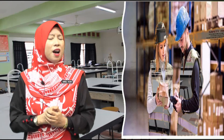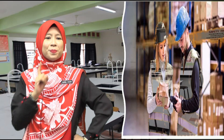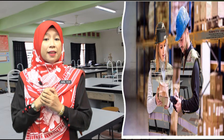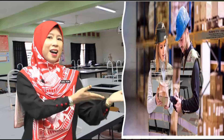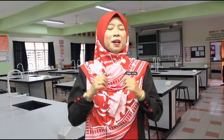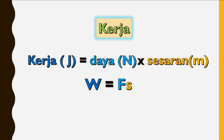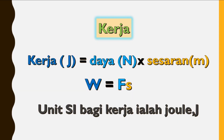Bagaimana pula dengan situasi kedua? Kedua-dua pekerja tersebut hanya membincangkan laporan sahaja. Adakah mereka berdua melakukan kerja? Mereka tidak mengenakan sebarang daya dan tiada sebarang penyesaran dari kedudukan asal mereka. Oleh itu, tiada kerja yang dilakukan. Untuk menghitungkan kerja yang dilakukan, kita menggunakan formula: Kerja sama dengan daya yang dikenakan pada objek darab dengan sesaran objek, iaitu W = FS. Unit SI bagi kerja ialah Joule.